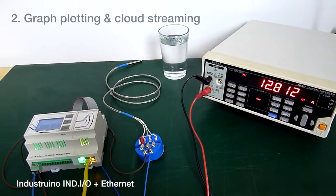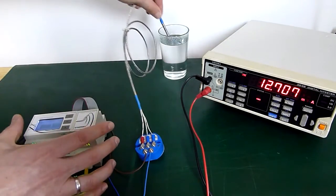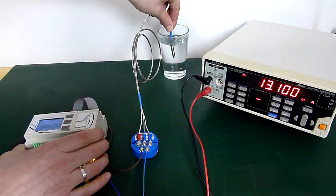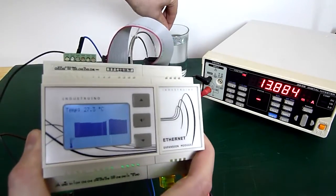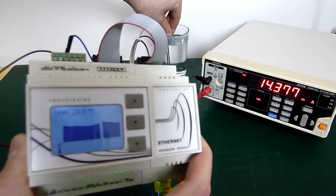In this example we've connected an Ethernet module to the Industrino. This will enable us to stream the data to the internet. The mA values are converted into a temperature reading and are plotted onto the display.